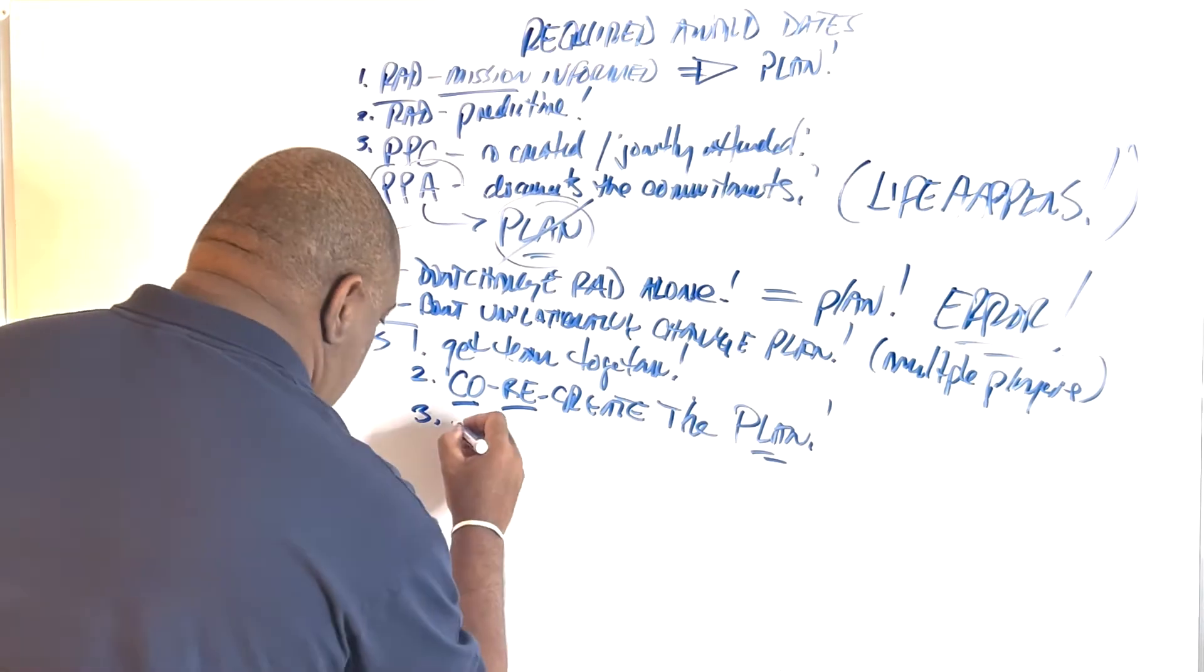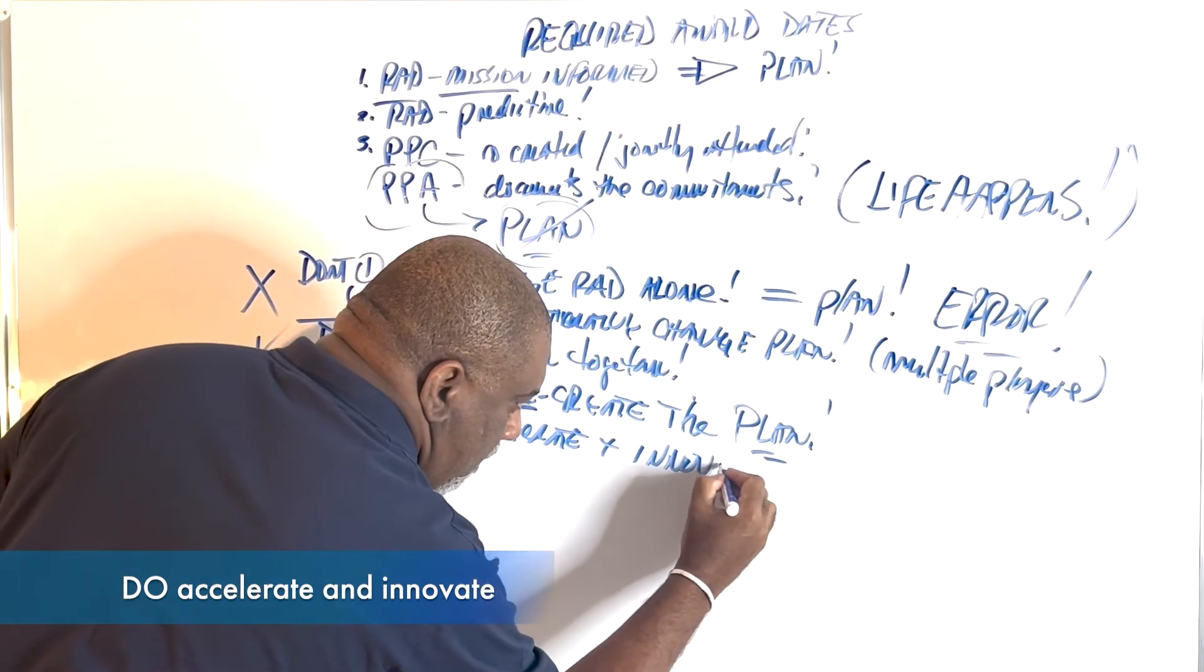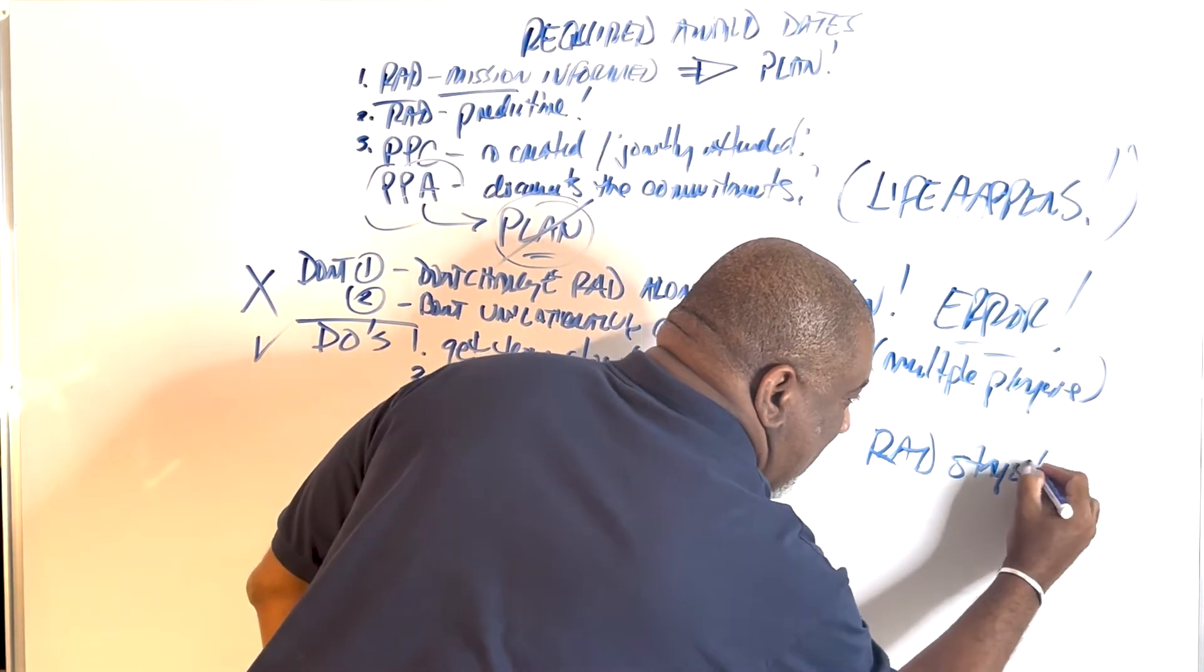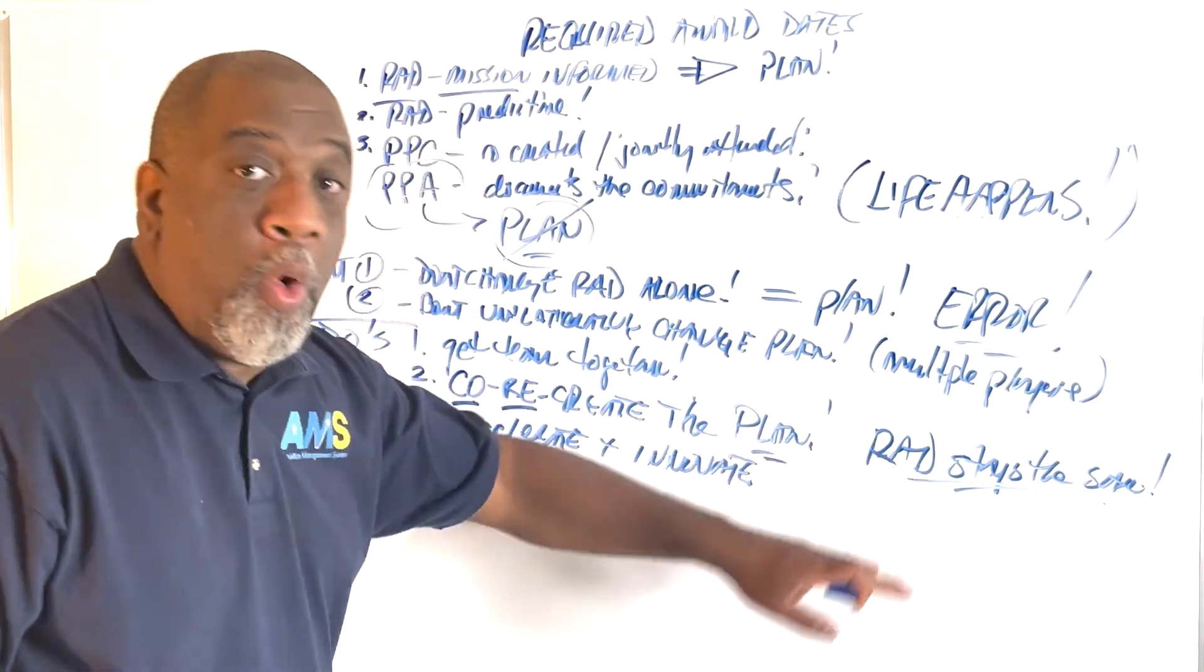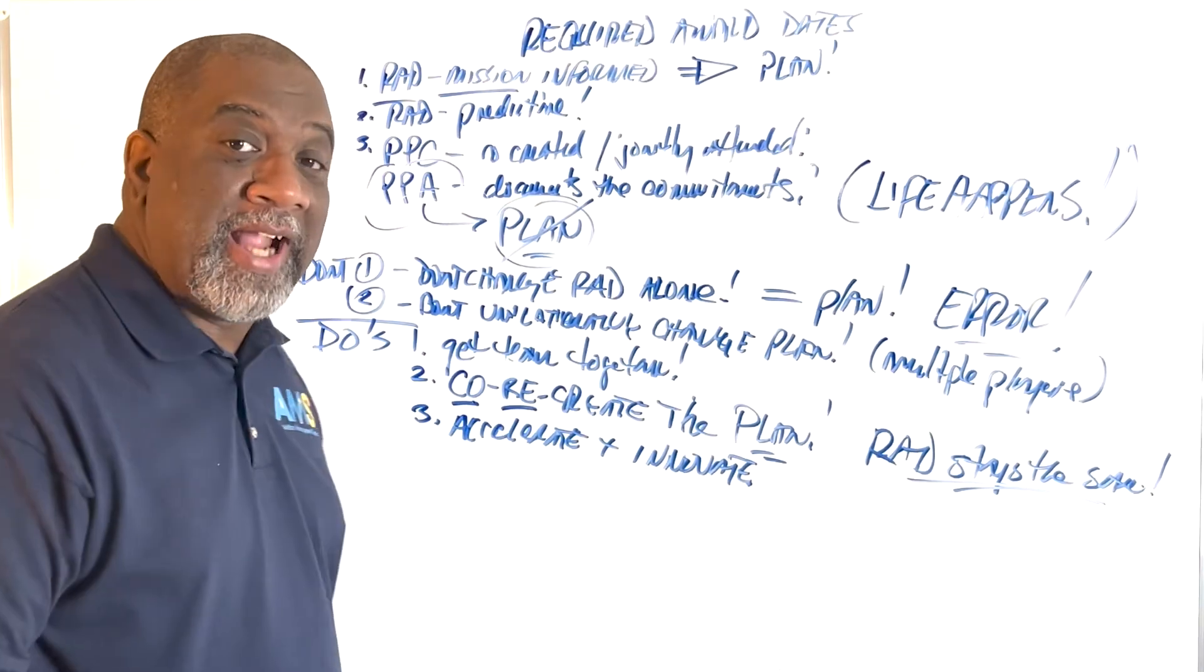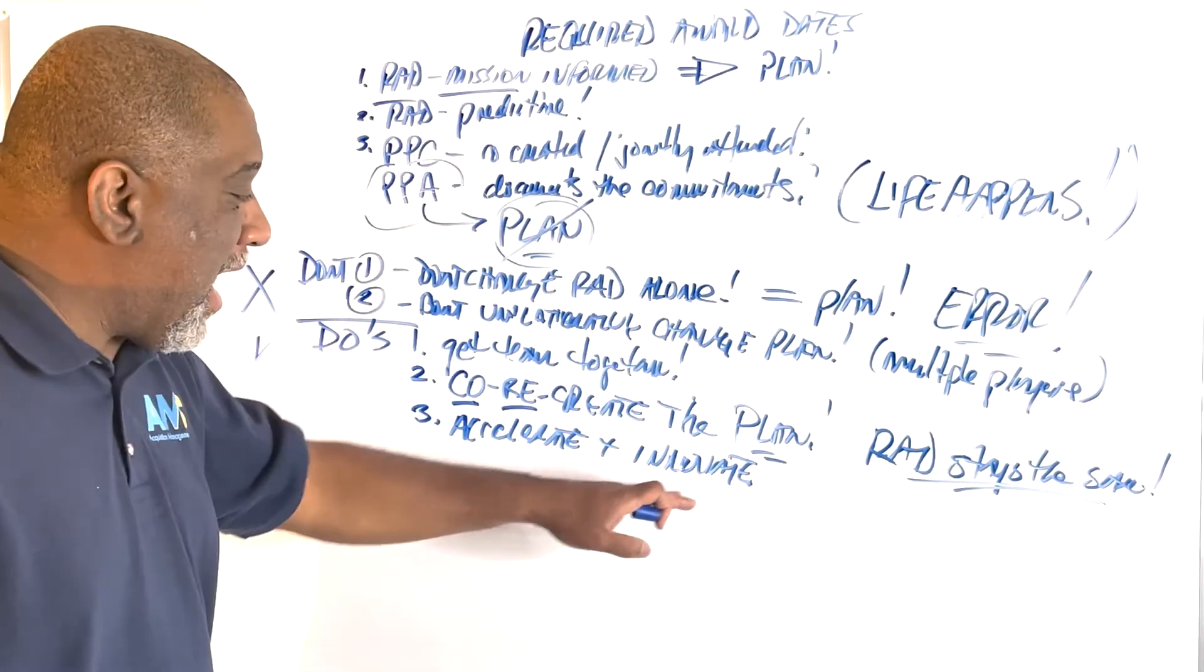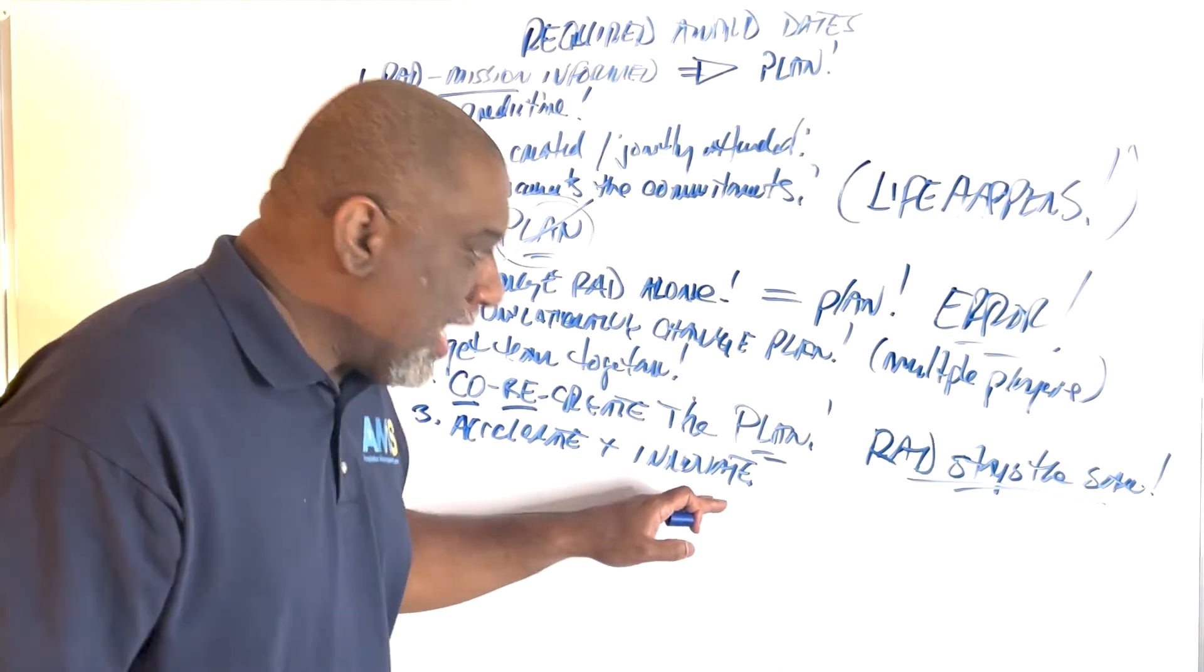Number three, accelerate and innovate. In order to create a new plan, specifically if the RAD stays the same, if the mission says the required award date doesn't change, then you've got to accelerate and innovate. You've got to pour fuel on some activities that you would have thought you had a normal processing time to do, and then you've got to rethink, reimagine, and maybe even create some new strategies to execute the plan in the time you have available. So, accelerate and innovate, that's a strategy.